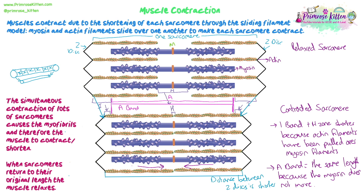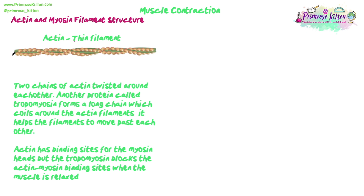When the sarcomeres relax and return to their normal length, the muscle relaxes and gets longer again. This describes how the fibres move, but we need to go into more detail to explain how actin and myosin actually interact to create the sliding filament model. To do this we first need to look at the two proteins that make up the two types of filament and examine their structure.